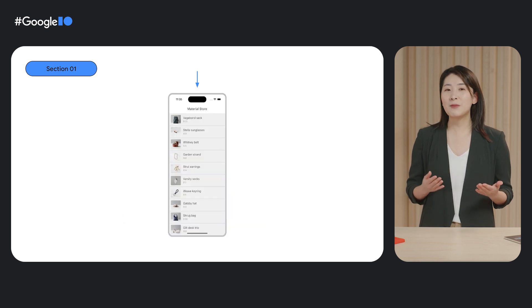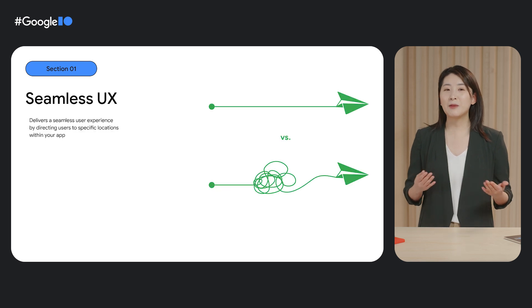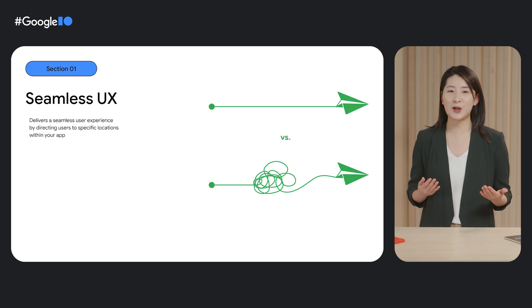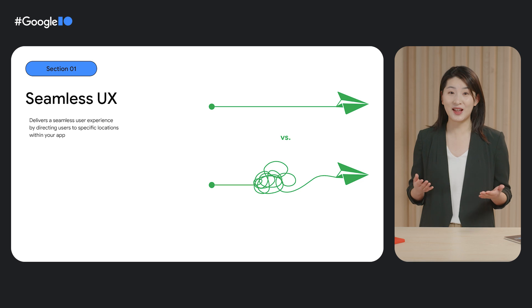But is that the best user experience? Our recommendation is to send your users to the specific product page on the app. Apps usually have a much smoother user experience than mobile websites. We've seen that users who are directed to apps are twice as likely to make that purchase. If you want to send your users to the app, you will need DeepLinks.